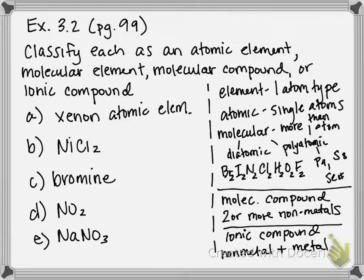So B is nickel chloride, and we'll learn more about how to name that this chapter. So hopefully you have a periodic table handy. You can look and see nickel is a metal, chlorine is a non-metal. There's two different types of elements present, so we can rule out that it's an element. And if we look at our compound classifications, it's not two non-metals, so it's not molecular. It's a non-metal plus a metal, therefore it is an ionic compound.